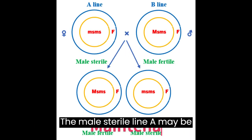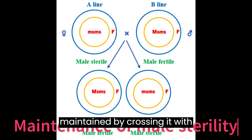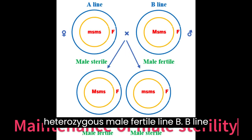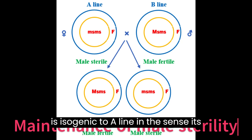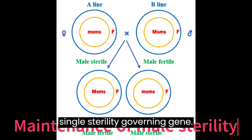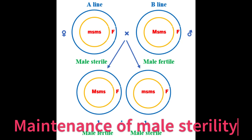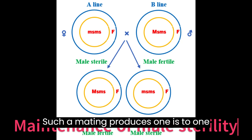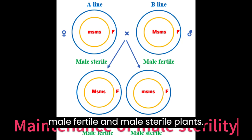The male sterile line A may be maintained by crossing it with a heterozygous male fertile line B. The B line is isogenic to the A line, in the sense that its genotype is similar to the A line except for the single sterility-governing gene. Such a mating produces a 1:1 ratio of male fertile to male sterile plants.